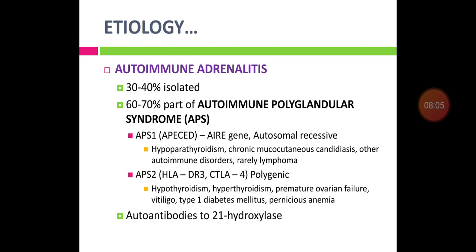Autoimmune adrenitis: almost 30–40% of patients present with isolated autoimmune adrenitis, while the remaining 60–70% have it as part of autoimmune polyglandular syndrome, which has two types — APS-1 and APS-2. APS-1 is associated with the AIRE gene and is an autosomal recessive disorder; associated conditions include hypoparathyroidism and chronic mucocutaneous candidiasis. APS-2 involves polygenic involvement associated with HLA-DR3 and CTLA-4 genes.